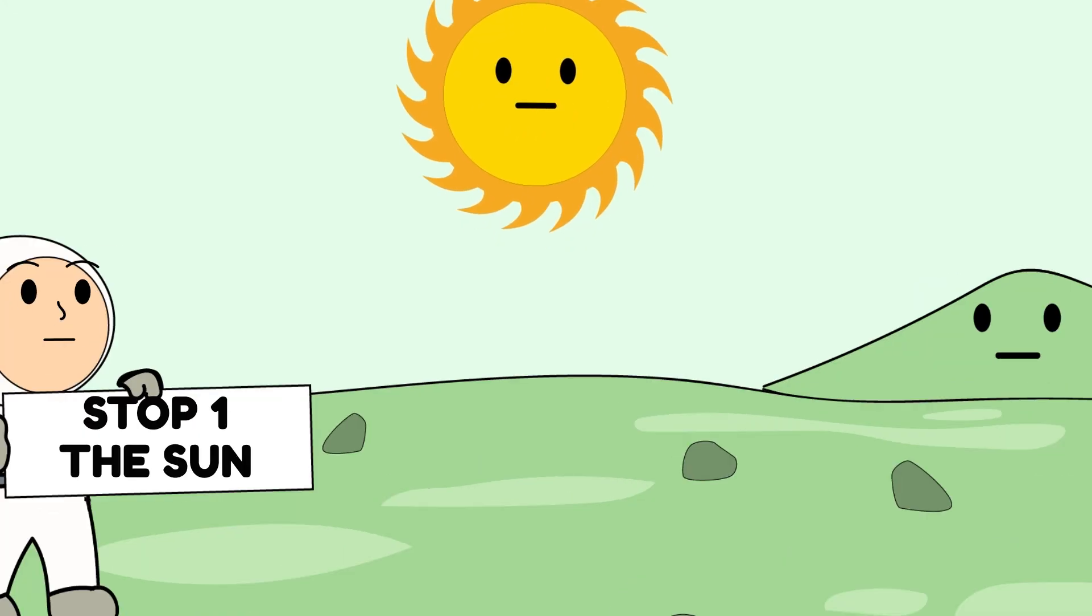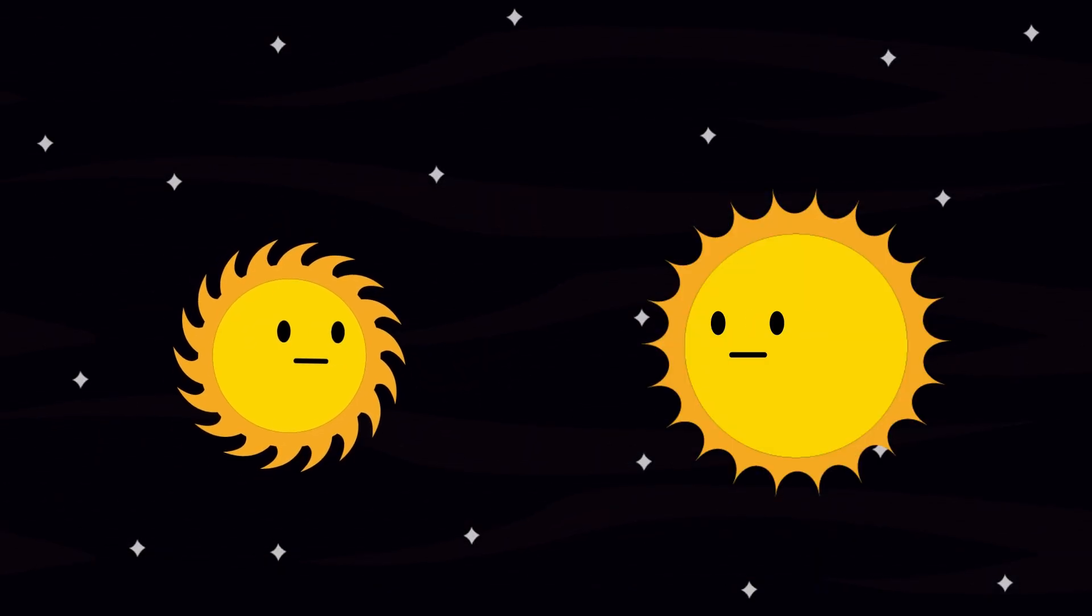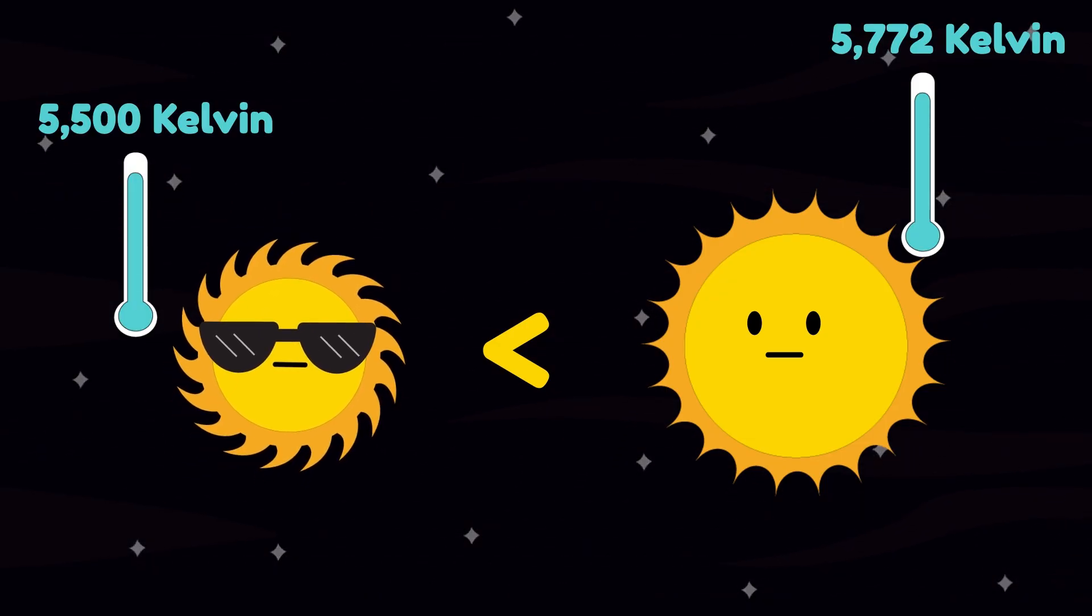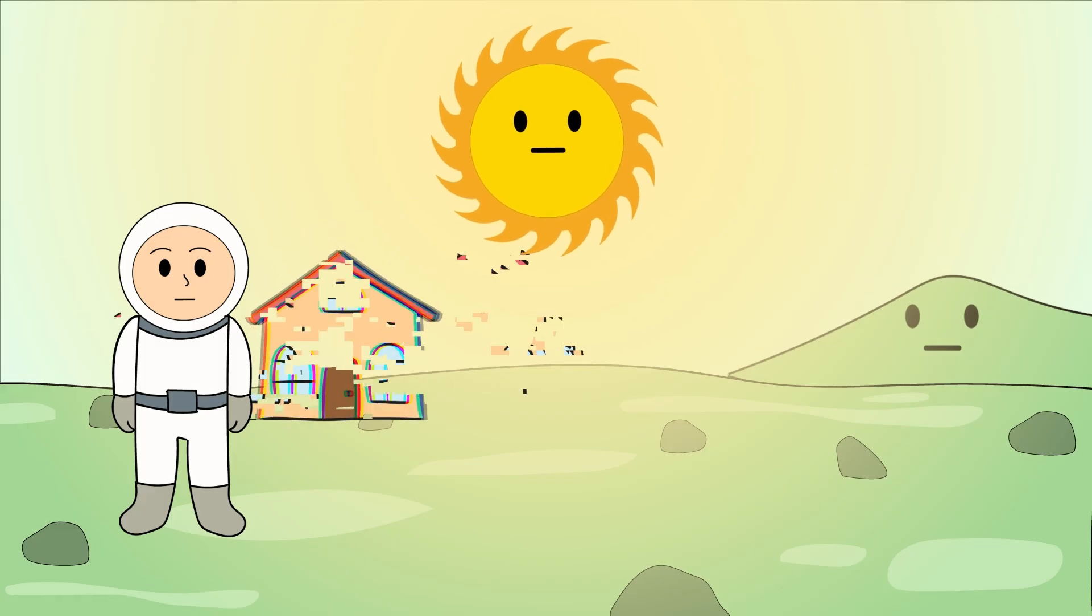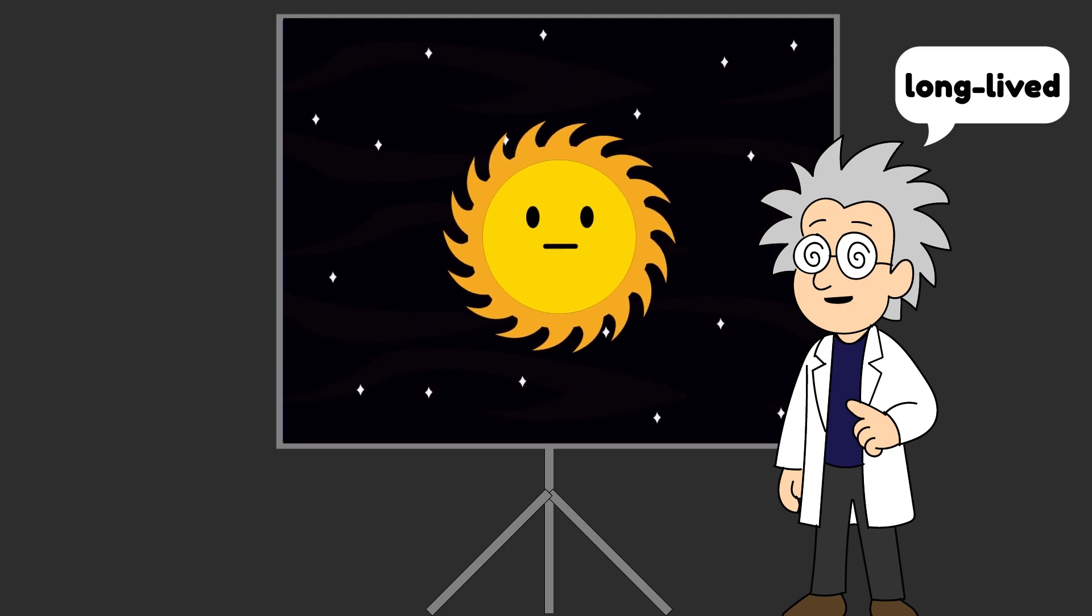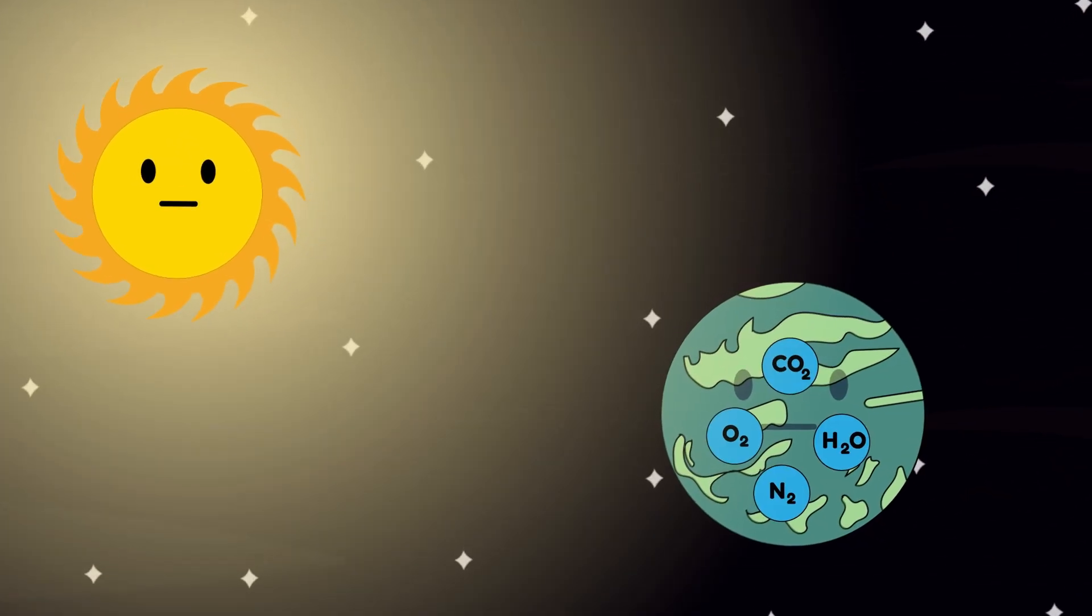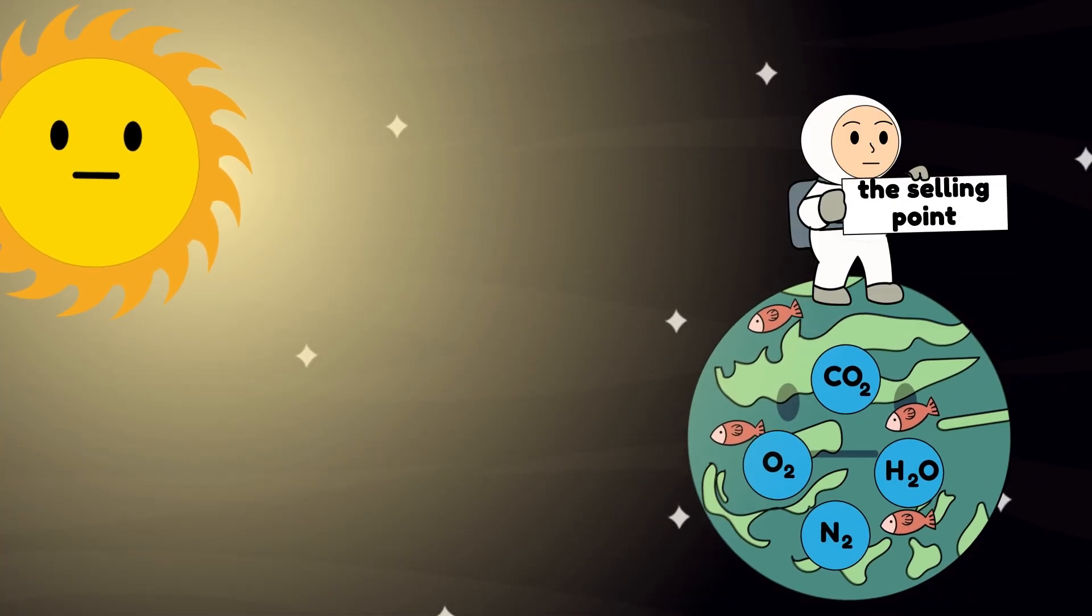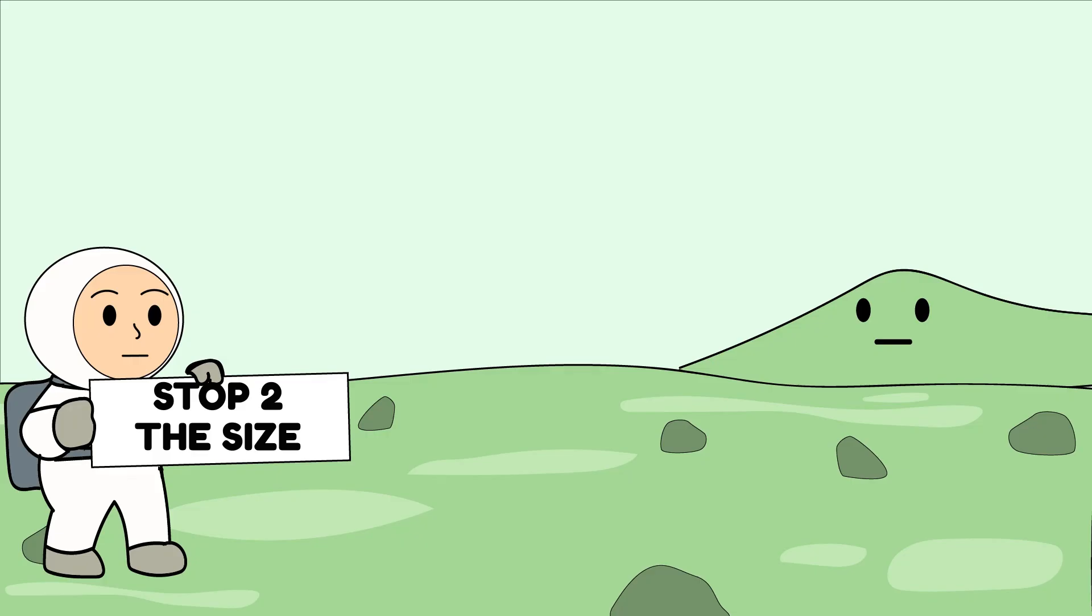All right, first stop on the surface tour. Look up. Kepler-22b orbits a G-type star, almost identical to our sun, just slightly smaller and cooler, with a surface temperature of roughly 5,500 Kelvin. The light it casts feels familiar in a deeply unsettling way, warm and comforting enough to trick your brain into thinking you're home. That resemblance isn't an accident. Stars like this are stable, long-lived, and predictable, the kind that give planets billions of years to form oceans, complex chemistry, and maybe even life. For a while, astronomers thought this was the selling point. But here's the thing they learned too late: the star isn't the danger. The planet is. Let's keep moving. Carefully.